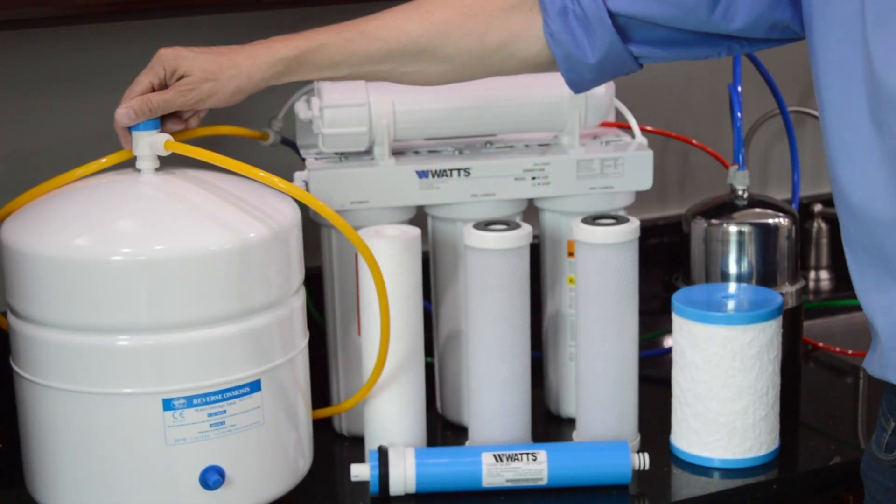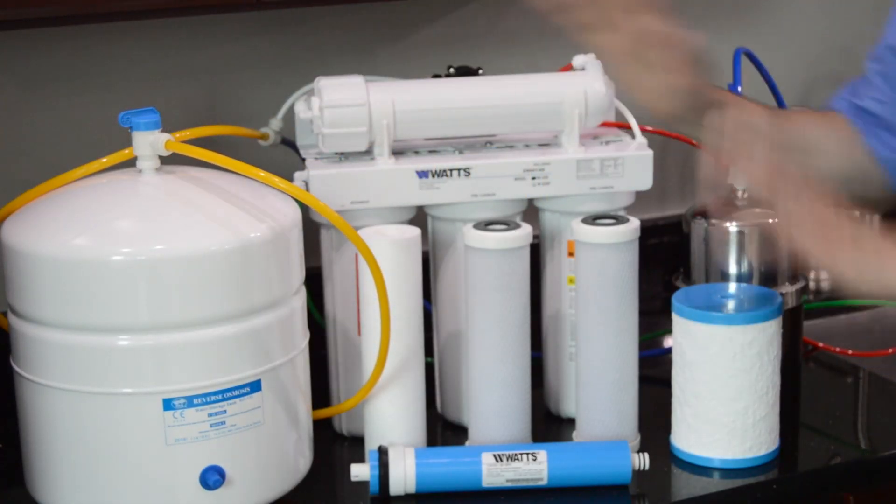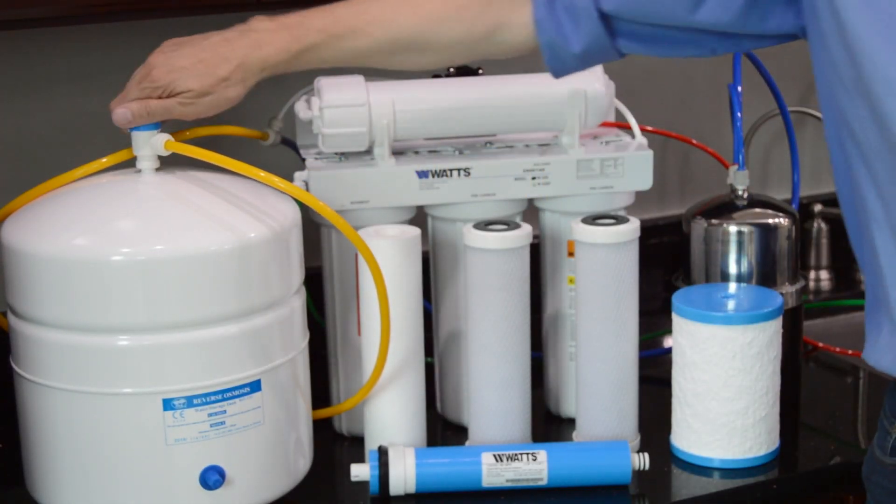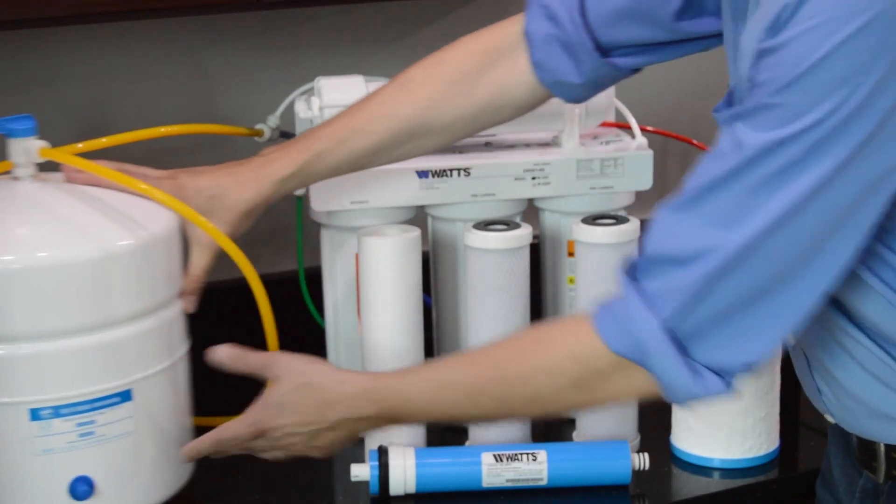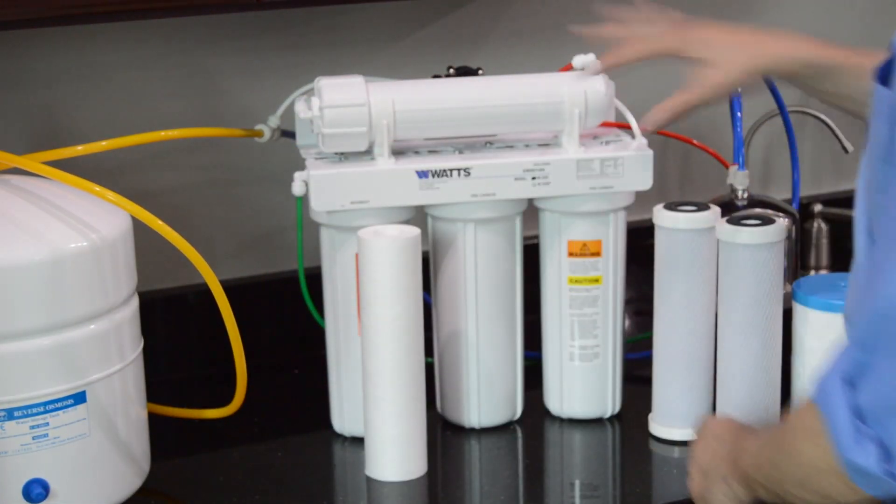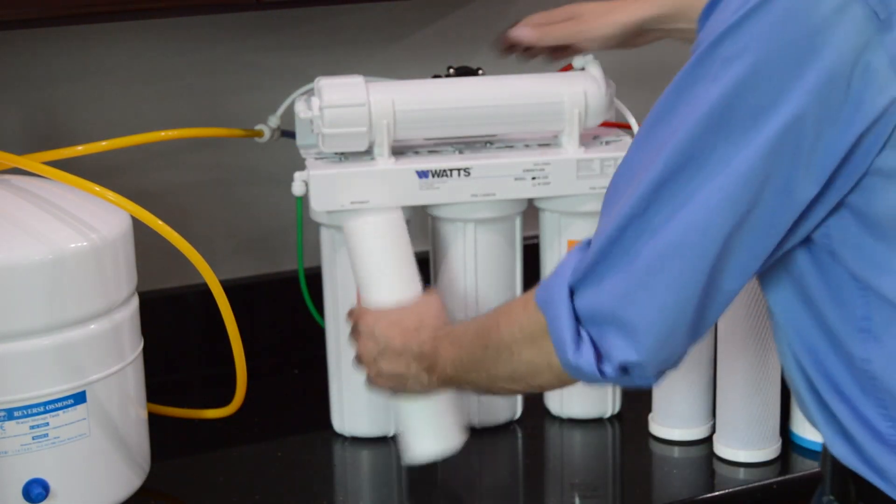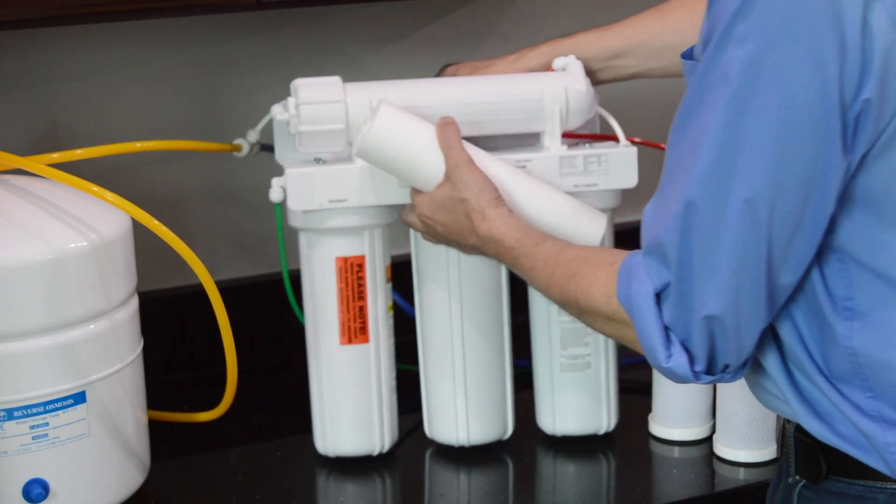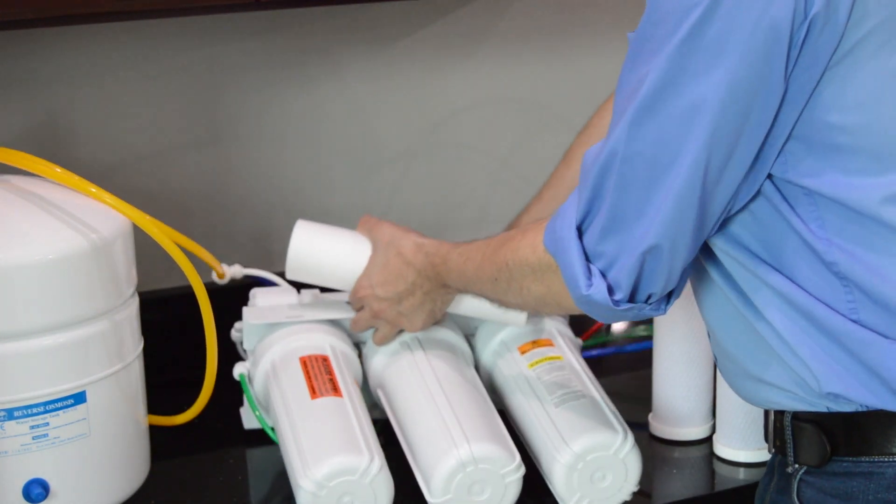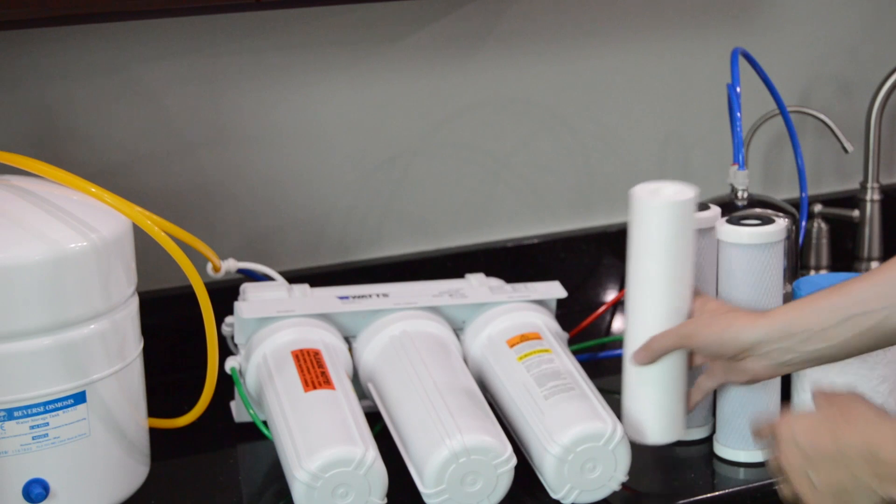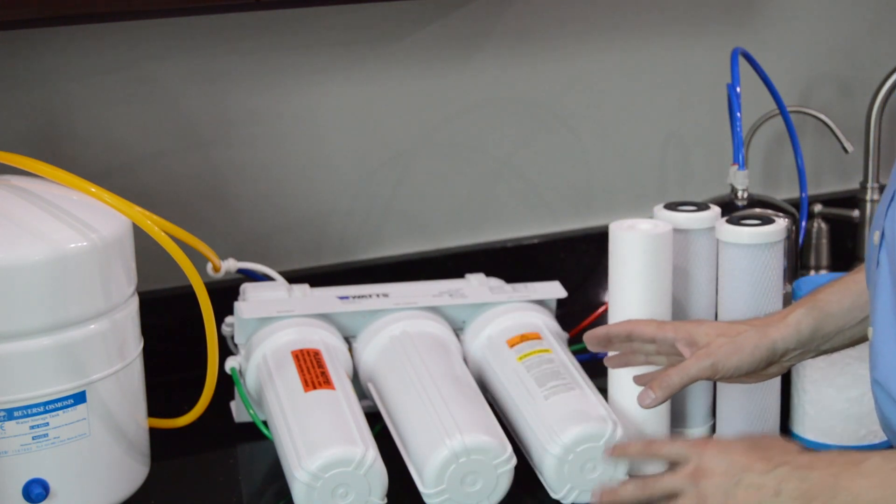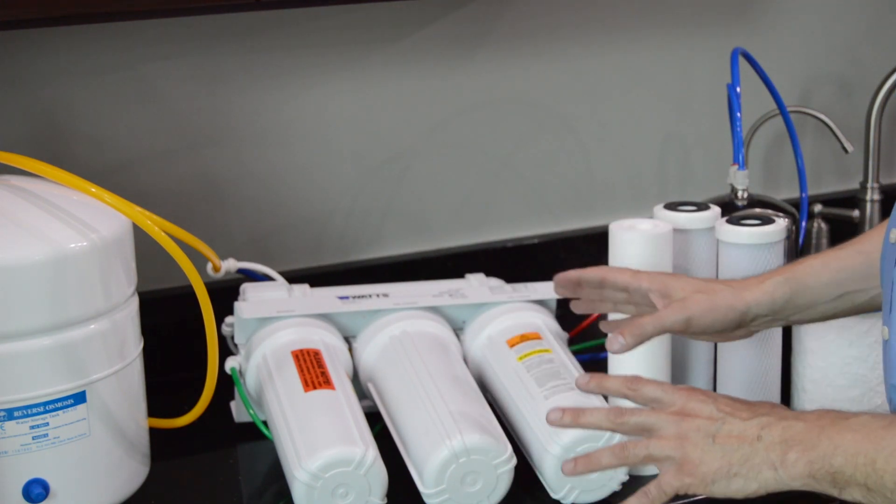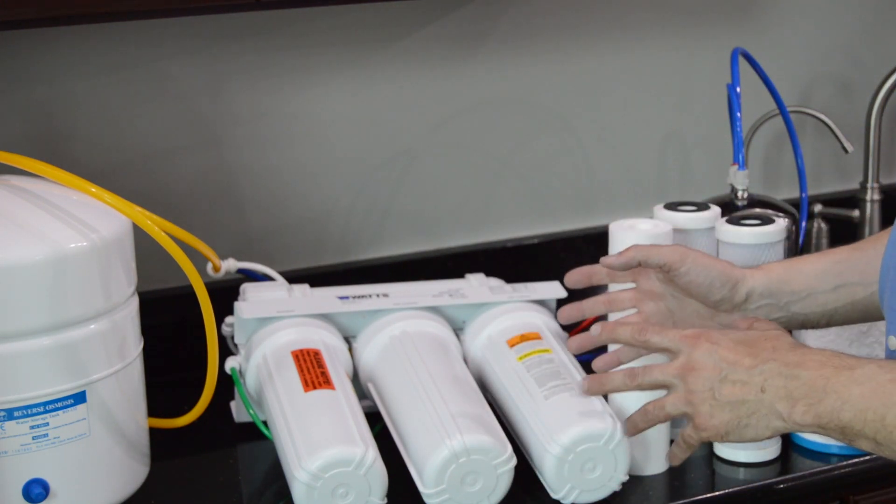When changing the RO system filters, first turn off the water below the sink and the valve at the top of the holding tank. Lay the system down for easier access to the filters. Set the system up in a basin to catch any water that may spill from the system.